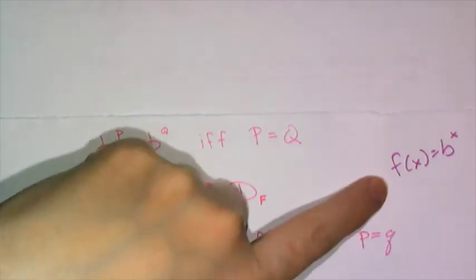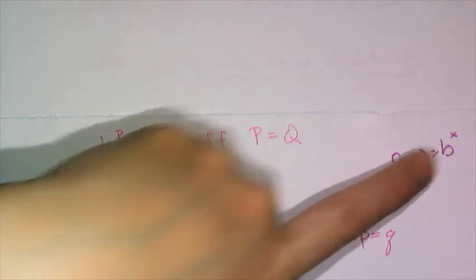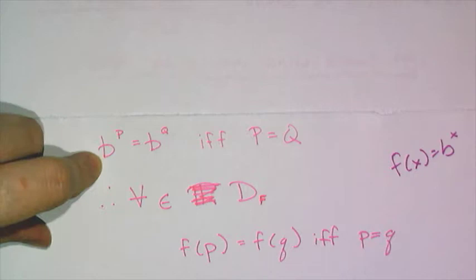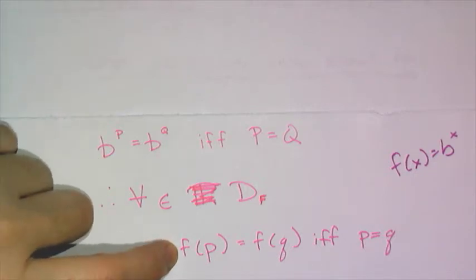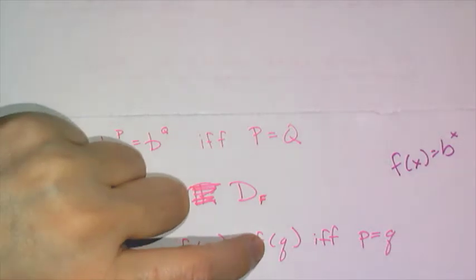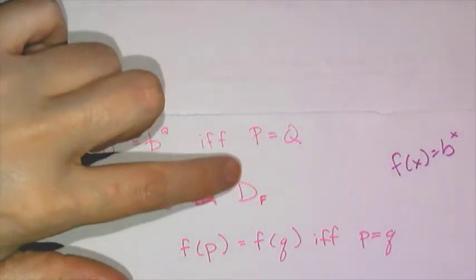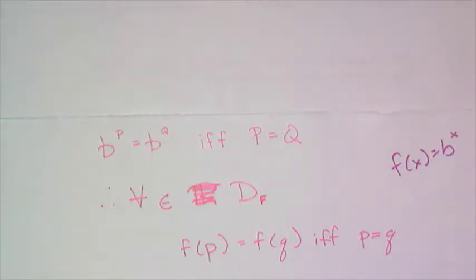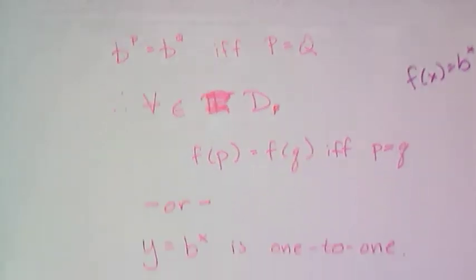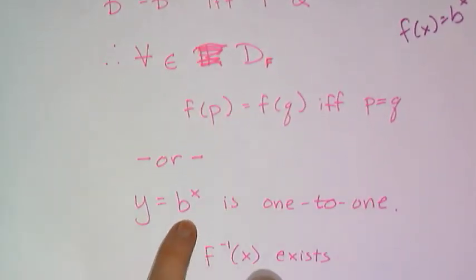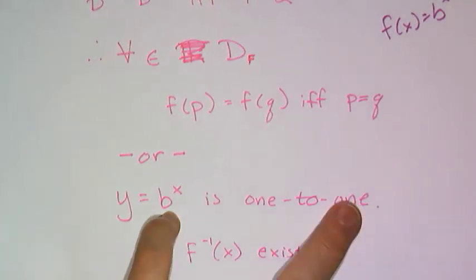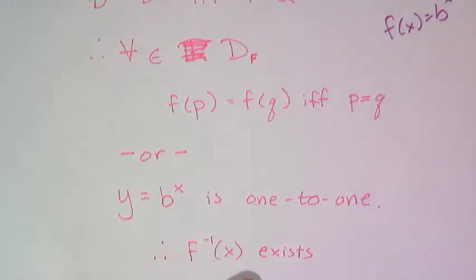If I remember that f(x) is some exponential function b to the x power, what this uniqueness property translates to is that the function value at p equals the function value at q if and only if p equals q for every element in the domain of function f. The two y values are equal if and only if the two x values that generated those y values are equal. If you remember what we talked about in terms of inverses, that means the function y equals b to the x or f(x) equals b to the x is one to one and therefore has an inverse.